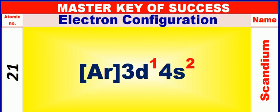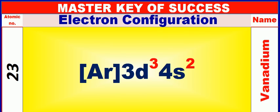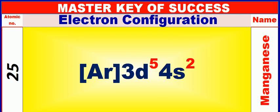Atomic number is 21 and name of atom is Scandium. Atomic number is 22 and name of atom is Titanium. Atomic number is 23 and name of atom is Panadium. Atomic number is 24 and name of atom is Chromium. Atomic number is 25 and name of atom is Manganese. Atomic number is 26 and name of atom is Iron.